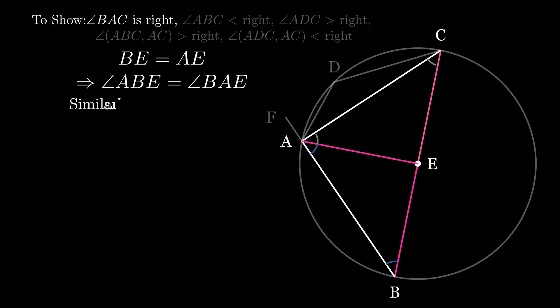For the same reason, angle EAC is equal to angle ACE. Adding angle BAE and angle EAC together shows that angle BAC is equal to angle ABC plus angle ACB.